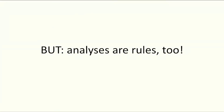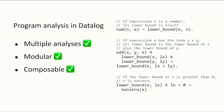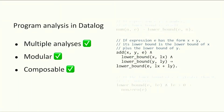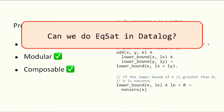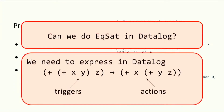Our insight is that analyses are rules too. People have been expressing analyses in a declarative rule-based language called datalog, where analyses are expressed as logical rules. Because they are expressed as rules, they are very flexible. Datalog supports multiple analyses, their definitions are modular as sets of individual rules, and these rules compose and cooperate to derive more precise analyses. Here's an example rule: if e is an expression of the form x plus y, then the lower bound of e should be the lower bound of x plus the lower bound of y. The question is: can we express EQSat in datalog to enjoy rich and composable analyses? To do this, we need to express both the triggers — the left-hand sides — and actions — the right-hand sides — in datalog.